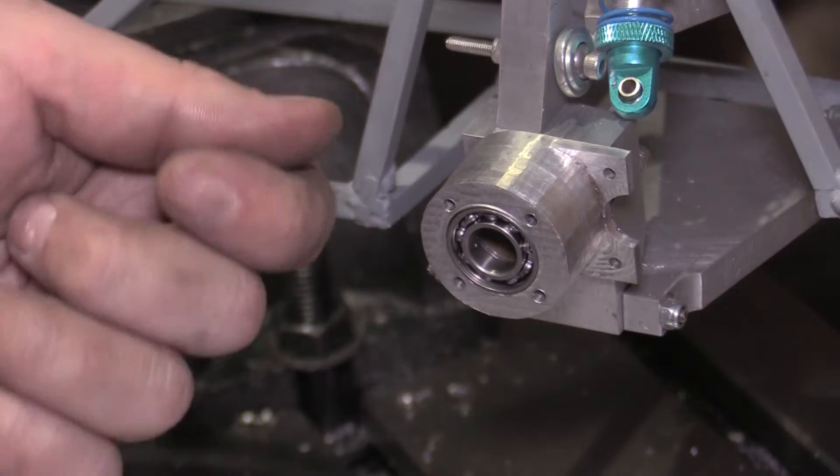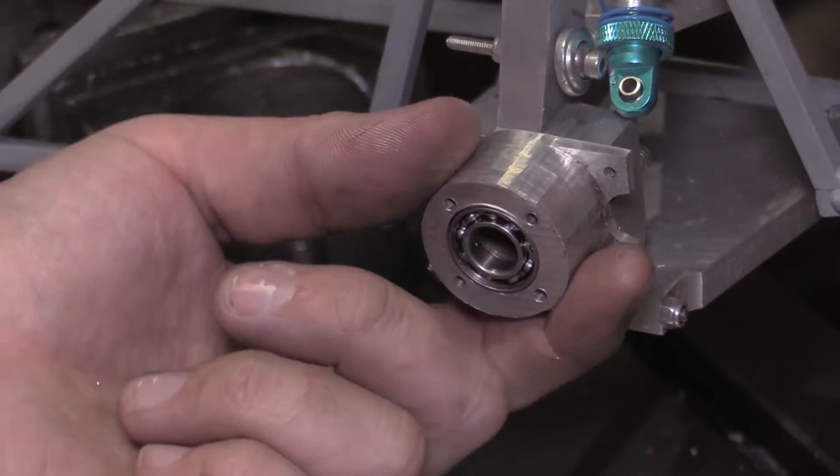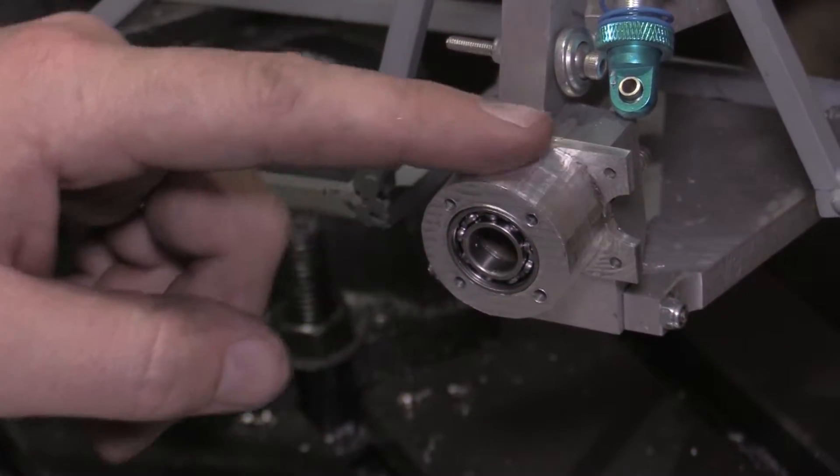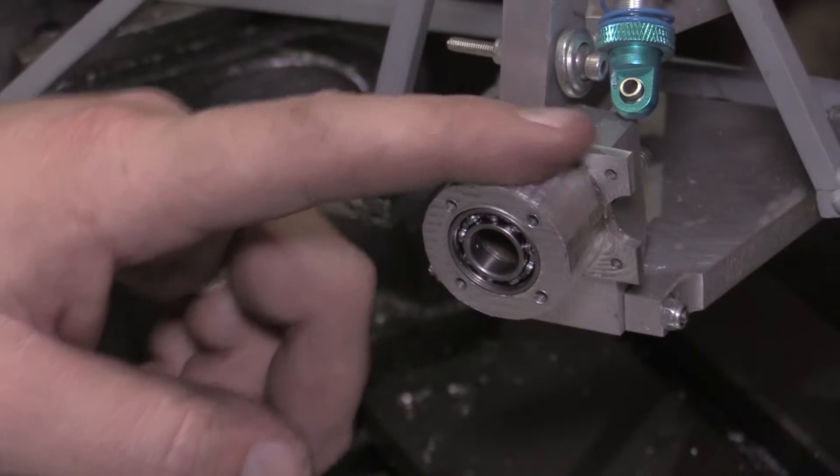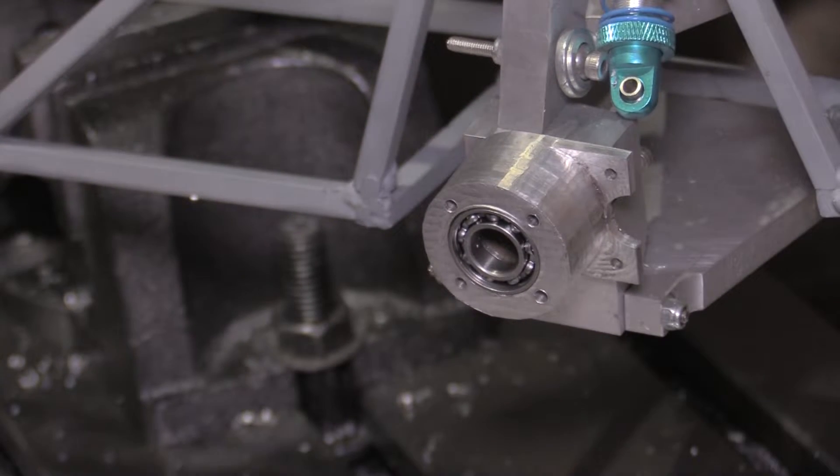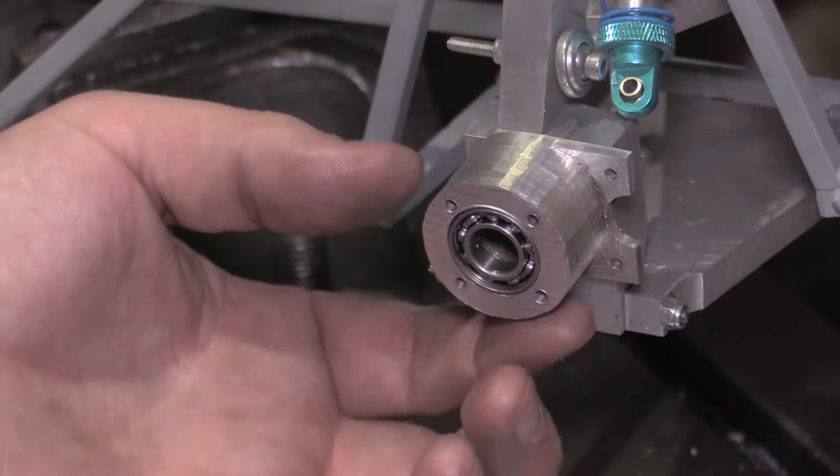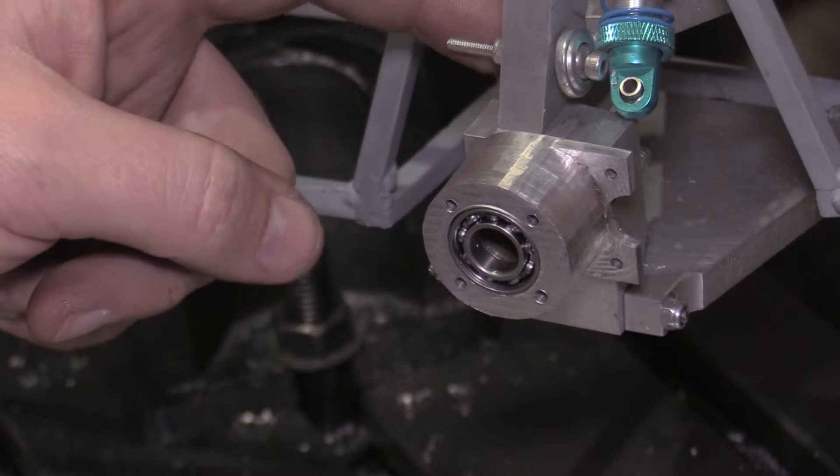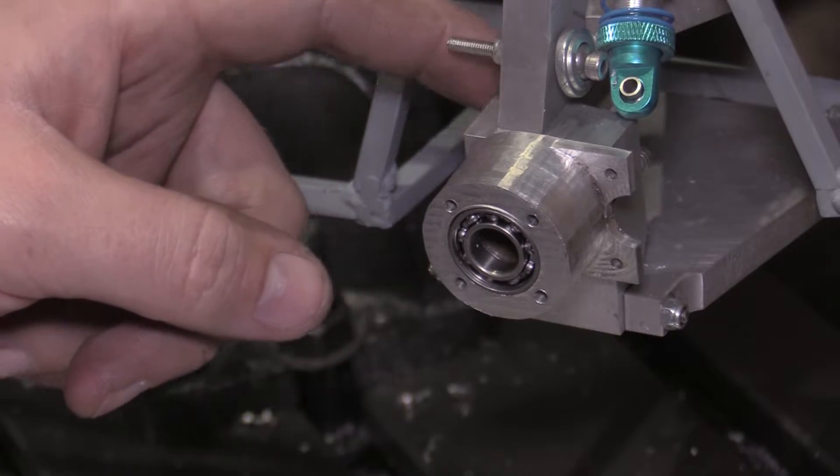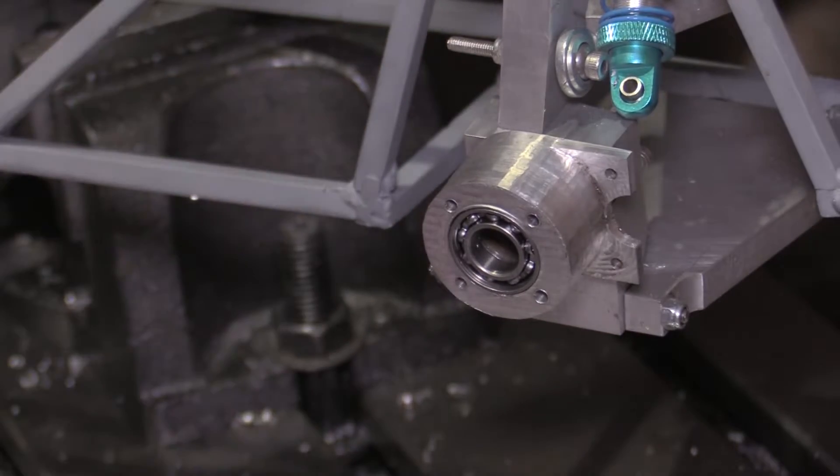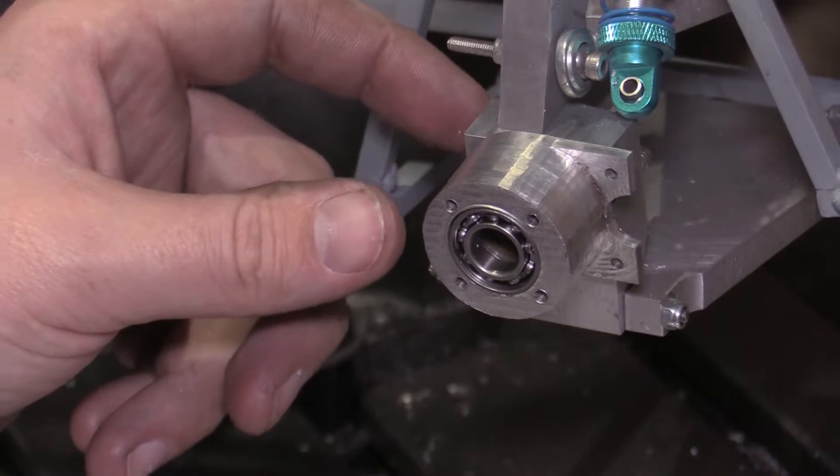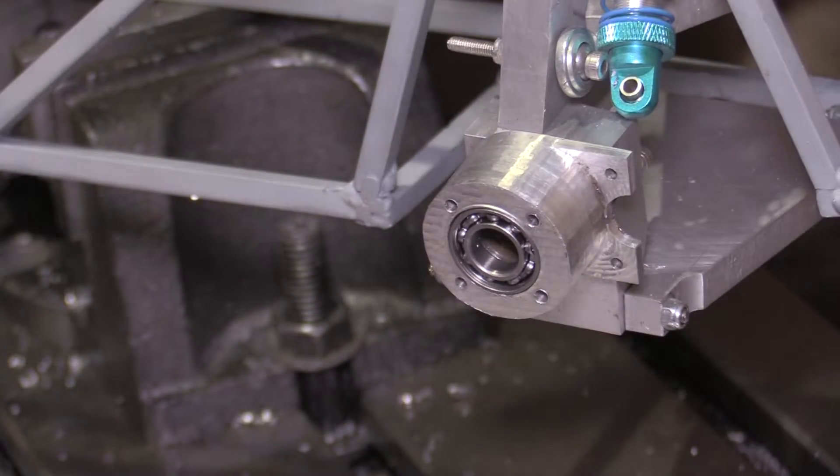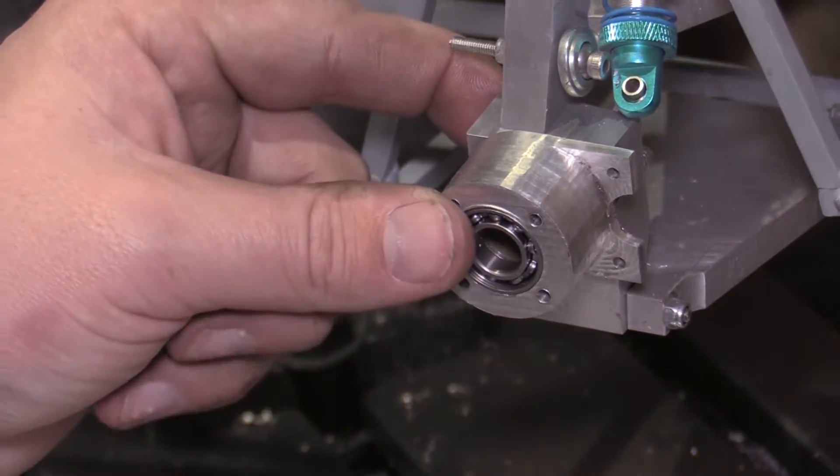I might give it a bit of a polish with some Scotch-Brite just to take some of the cut marks off from the CNC mill. But overall I'm happy with that. I do need to get some slightly shorter bolts because the ones I put in there are a bit too long and don't quite pull it tight. So I'll get some shorter bolts and get that fixed on properly.